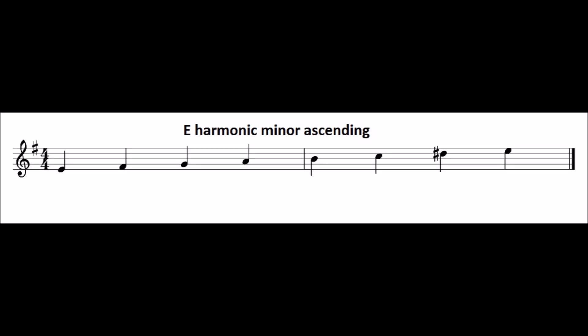The first one is E-harmonic minor ascending, that means going up. E-harmonic minor has a key signature of F-sharp, but you also need to raise the seventh note D to D-sharp. Now try B-flat melodic minor ascending.